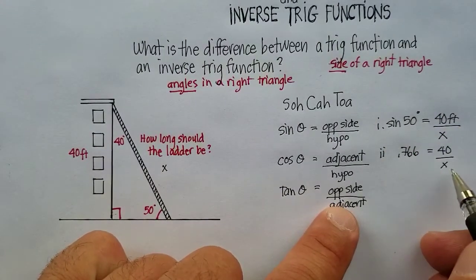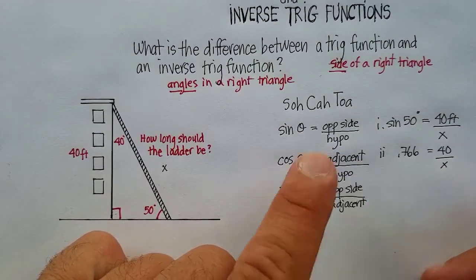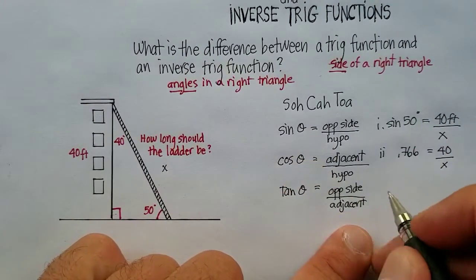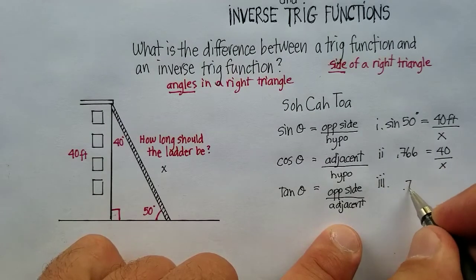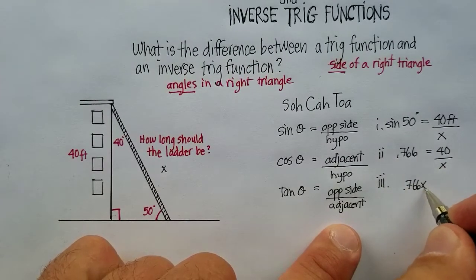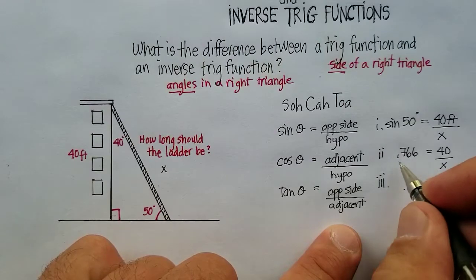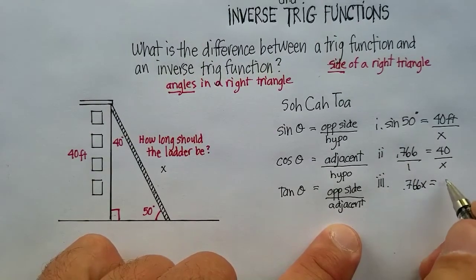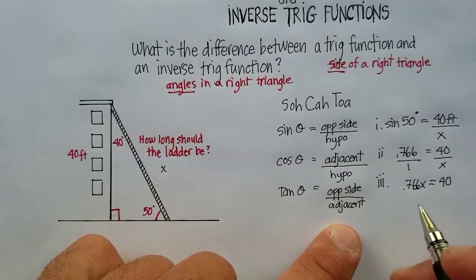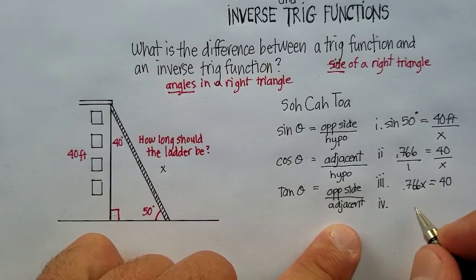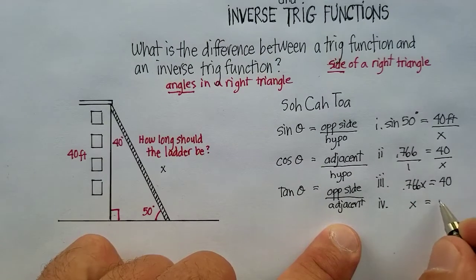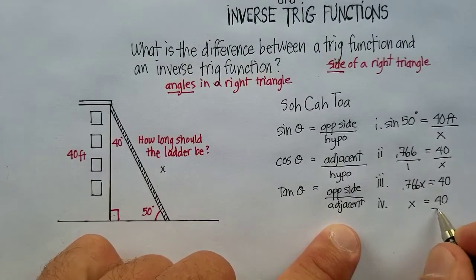Now let's just go ahead and get the x in the numerator. Remember, just go ahead and cross multiply. And I'm going to get .766x, remember this is over one, is equal to 40. Let's divide both sides by .766. Here's my fourth step. And I get x is equal to 40 over .766.